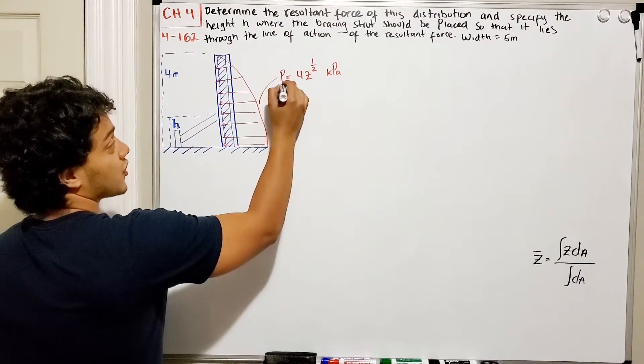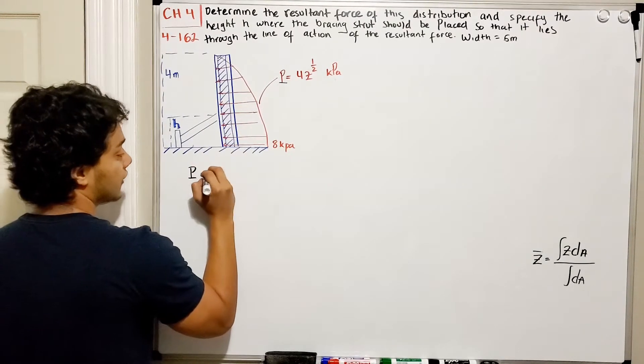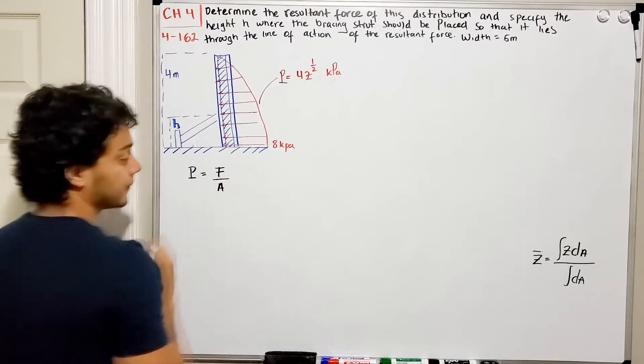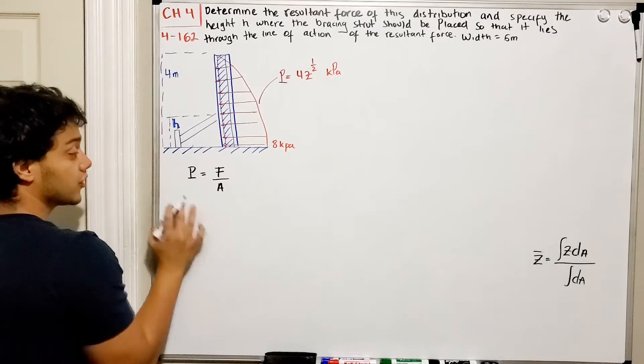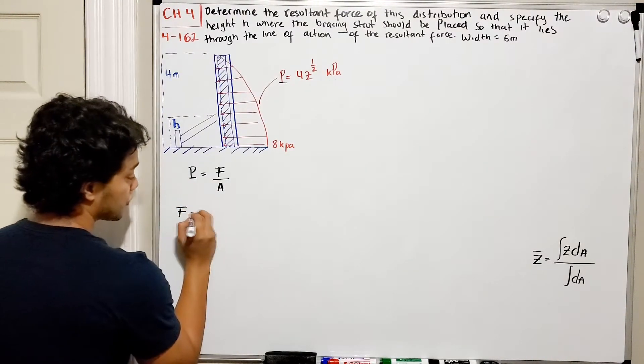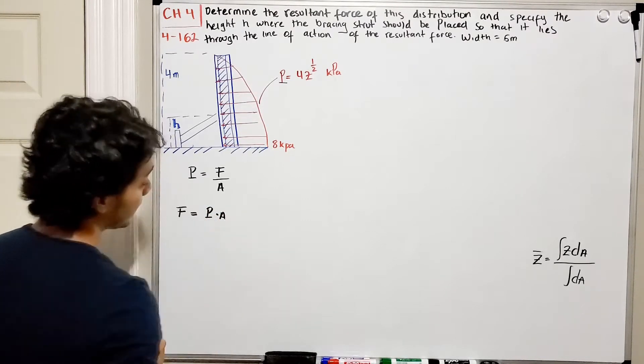Now, this is pressure. What do we know about pressure? Pressure is equal to force over my area. If I want to find the force that a pressure is doing, I need to solve for F, which is going to be equal to pressure multiplied by my area.